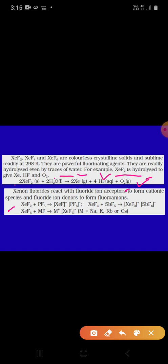Xenon fluoride react with fluoride ion acceptor to form cationic species. This is very important. So when XeF2 react with PF5, it will form XeF+ and PF6-. Similarly, XeF4 react with antimony pentafluoride. It will form XeF3+ SbF6-. XeF6 plus MF that is metal positive XeF7-. So remember this one and here metal can be sodium, potassium, rubidium and cesium.